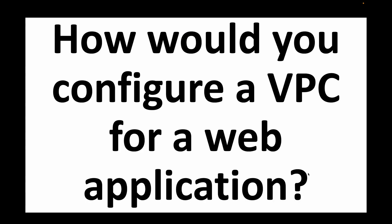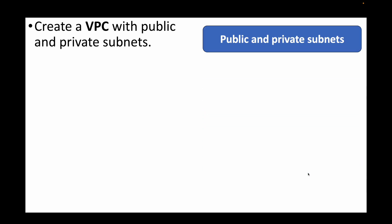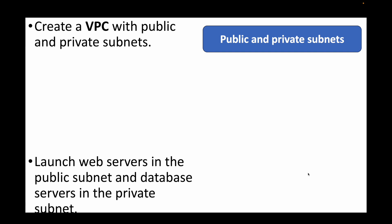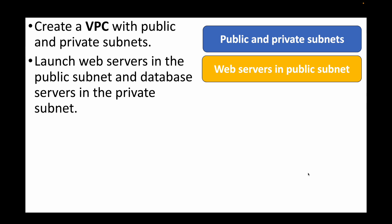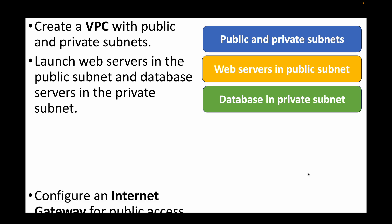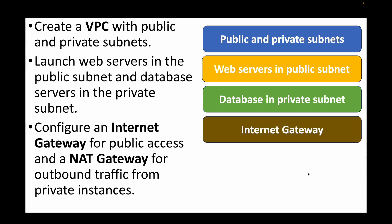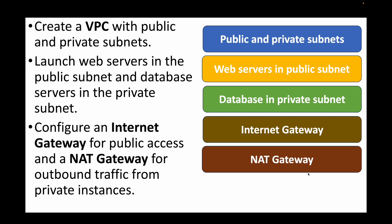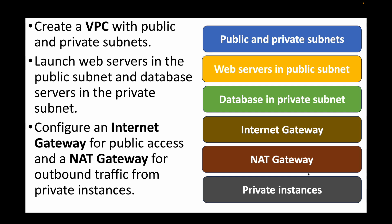The next question is: how do you configure a VPC for a web application? VPC is basically your network in AWS. You create a VPC with public and private subnets — public subnets host your web servers and private subnets host your databases. You configure an internet gateway to provide internet access to your public subnet, and a NAT gateway to provide outbound internet access for instances in the private subnet. You also need to update your route tables so that traffic from the internet gateway routes to the public subnet and traffic from the NAT gateway routes to the private subnet.